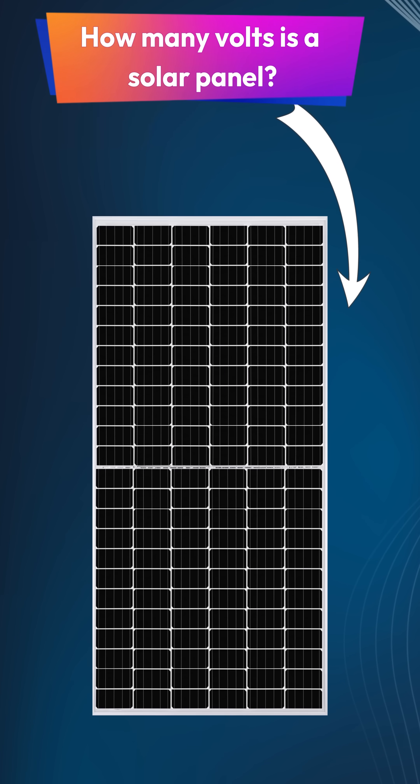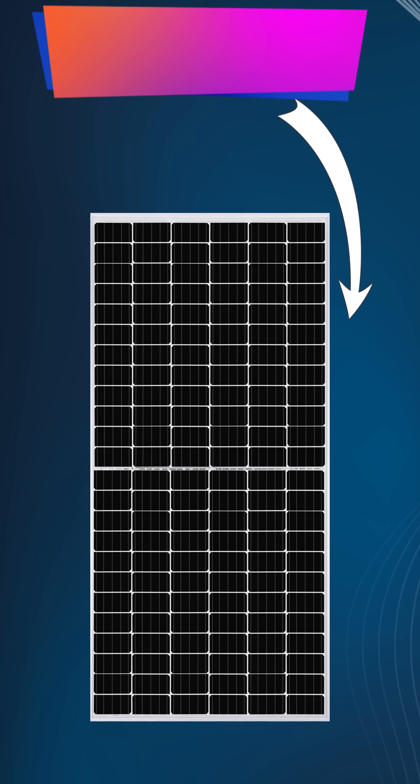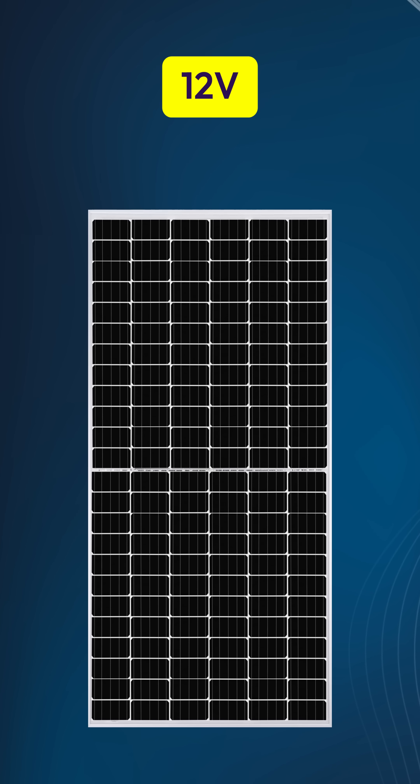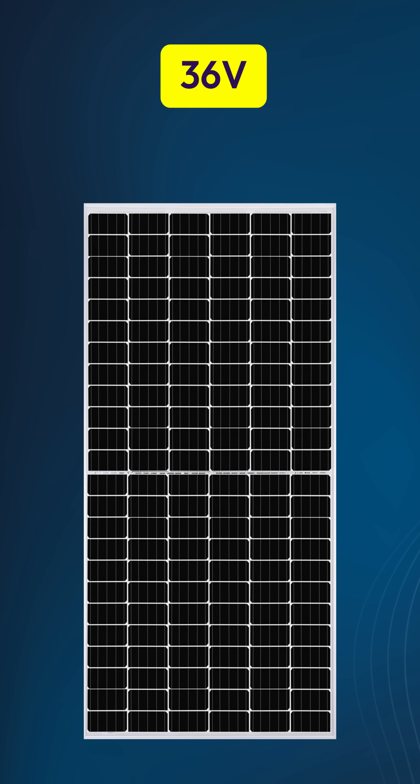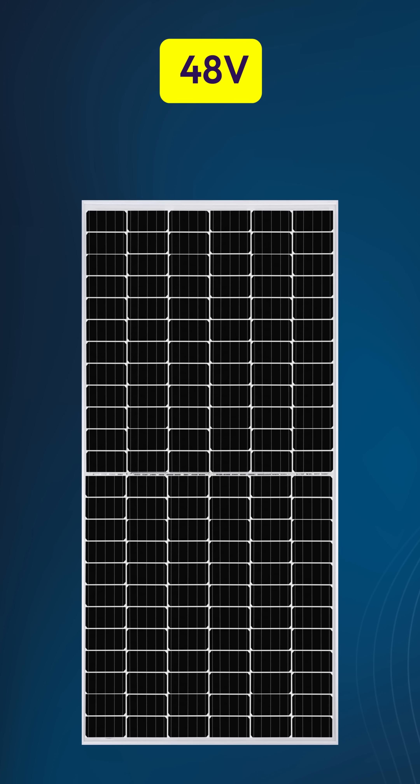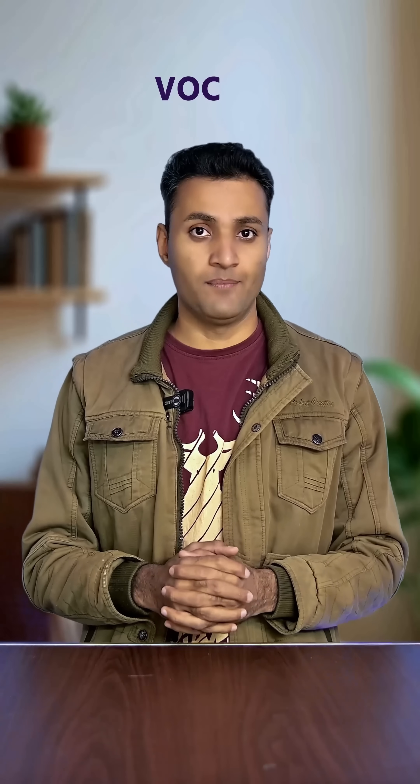When we talk about solar panel voltage, people usually say 12V, 24V, 36V, or 48V. But this is not the actual voltage. A solar panel's real voltage is defined by its VOC, the open circuit voltage.